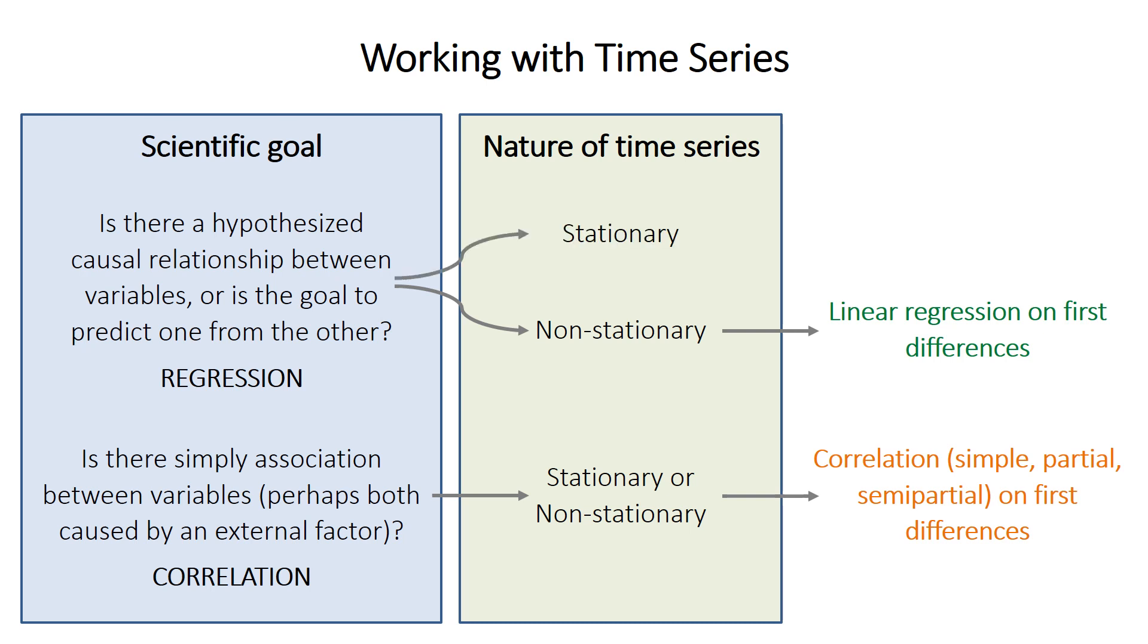Finally, if you're doing regression and the time series is stationary, you can use a technique called generalized least squares regression, which I have a separate video on, so I won't go into here. But it's also totally fine to do, in this case, ordinary least squares regression on the first differences, just like you would otherwise.